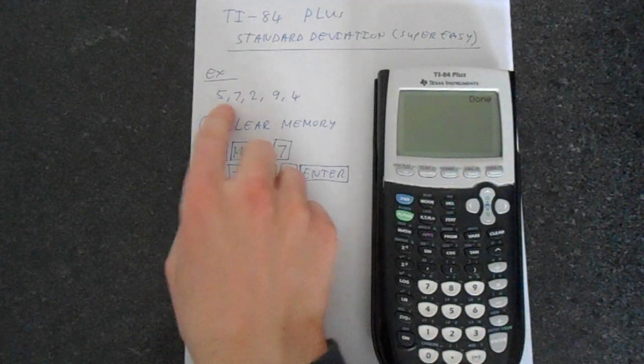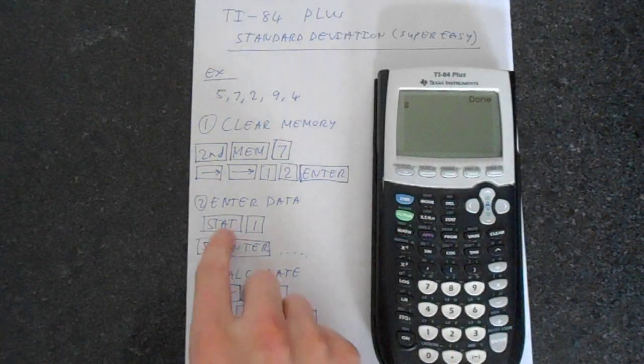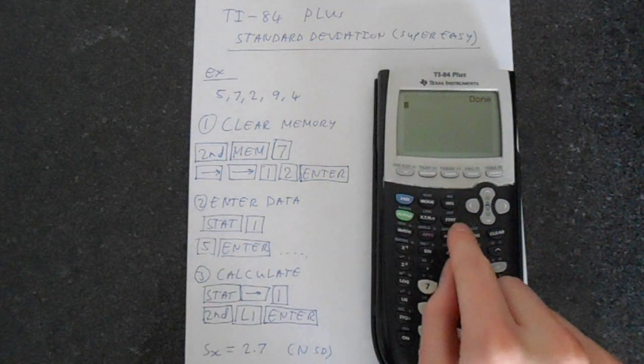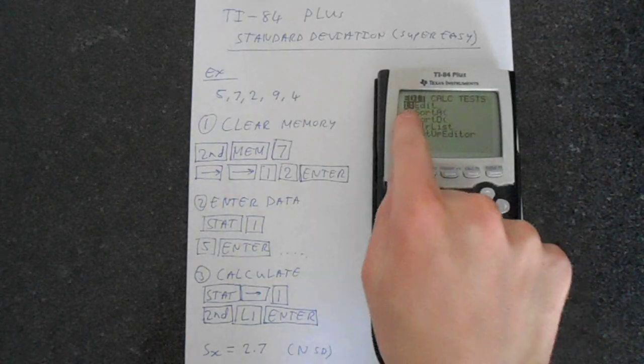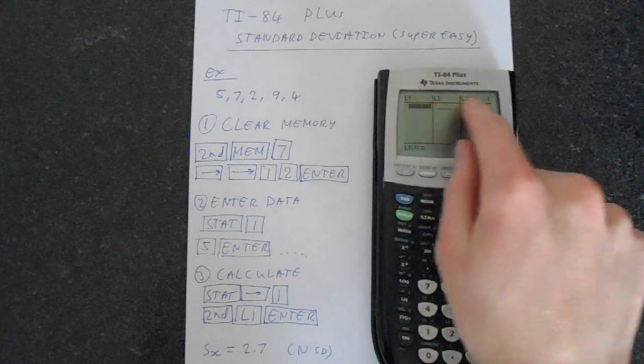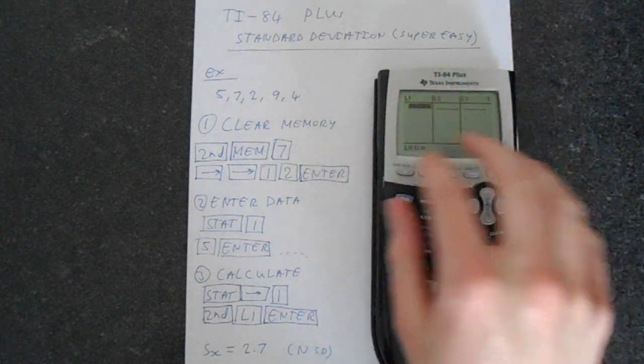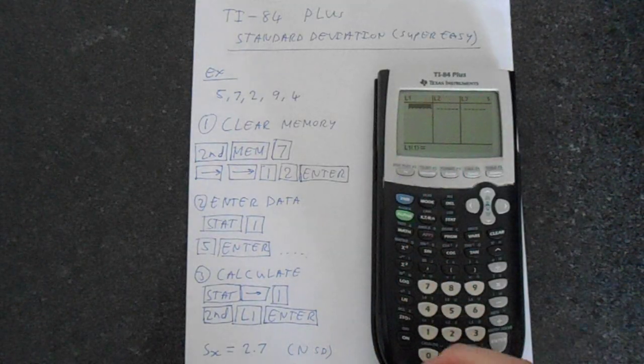So now let's enter our data. We've just got this random simple example, 5, 7, 2, 9, 4. So I just press stat which is here and then one to edit. This gives you this view so you can populate these lists, L1, L2, L3 and you can use these. You can tell the calculator to graph these or access these when you need them.